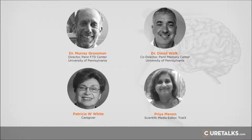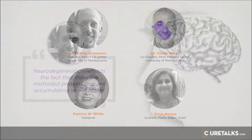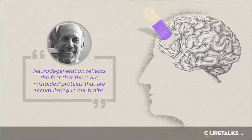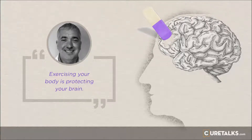Neurodegeneration reflects the fact that there are misfolded proteins accumulating in our brains. All of our brain cells or neurons depend on the functioning of proteins. Under some circumstances, these proteins can become misfolded, and when they become misfolded they can no longer perform their essential function. Depending on where in the brain this process is occurring, we'll see different kinds of symptoms. If misfolded proteins accumulate in the part of the brain important for language, that will result in some difficulty with language functioning. If proteins become misfolded and accumulate in the memory part of the brain, that will result in some difficulty with memory.